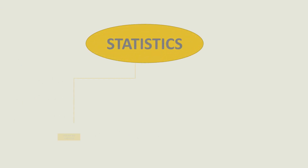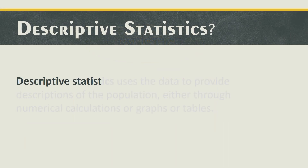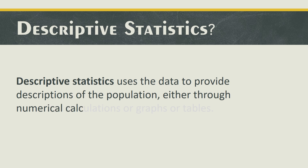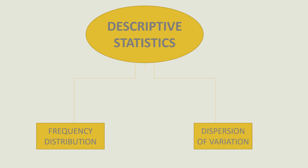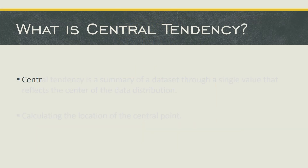What is descriptive statistics? Descriptive statistics use the data to provide descriptions of the population, either through numerical calculations, graphs, or tables. Descriptive statistics further has three types: frequency distribution, dispersion or variation, and central tendency.